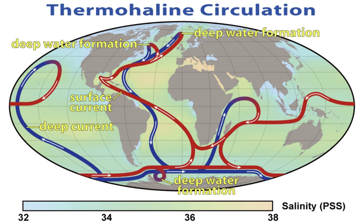Oceanic heat content refers to the heat stored in the ocean. The changes in the ocean heat play an important role in sea level rise because of thermal expansion. Ocean warming accounts for 90% of the energy accumulation from global warming between 1971 and 2010.